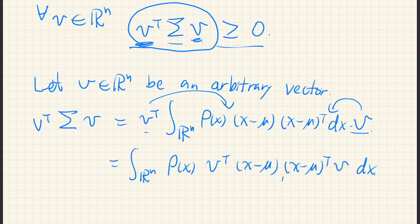Note that this is a dot product between x minus mu and v. Because this is a row vector and this is a column vector, so it is basically a dot product. And this one here, we can write in this way.